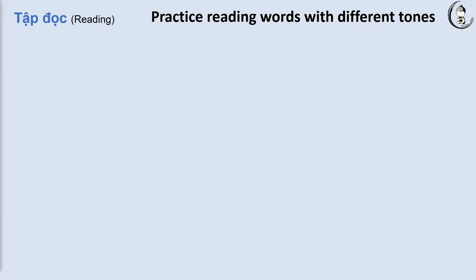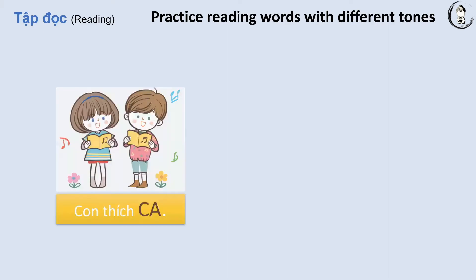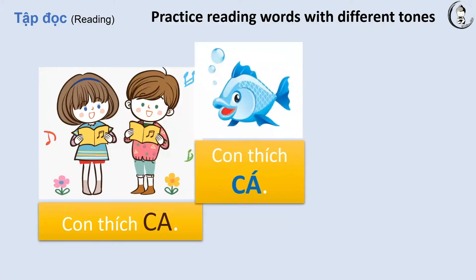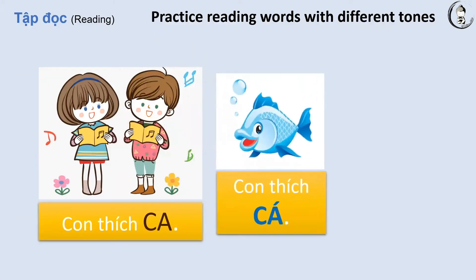In this lesson, we practice reading words with different tones. Why do we need to practice tones and diction? Imagine you want to say that you like to sing, but people hear that you like fish, or they might even hear that you like tomato.